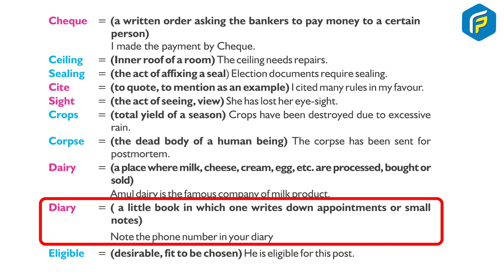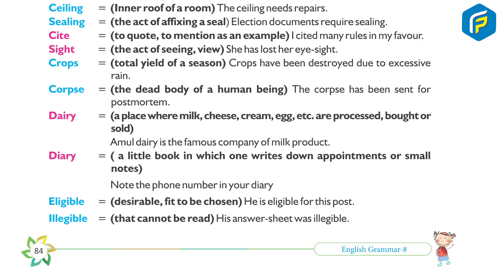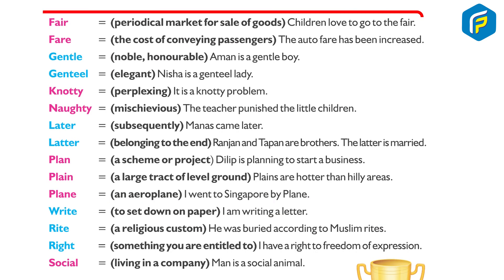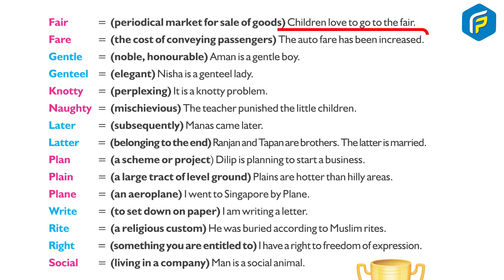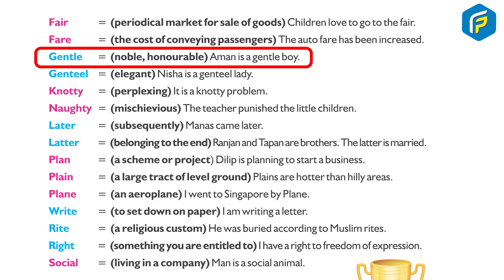Diary: a little book in which one writes down appointments or notes — 'Note the phone number in your diary.' Eligible: fit to be chosen — 'He is eligible for this post.' Illegible: that cannot be read — 'His answer sheet was illegible.' Fair: a periodical market for sale of goods — 'Children love to go to the fair.' Fare: the cost of conveying passengers — 'The auto fare has been increased.'